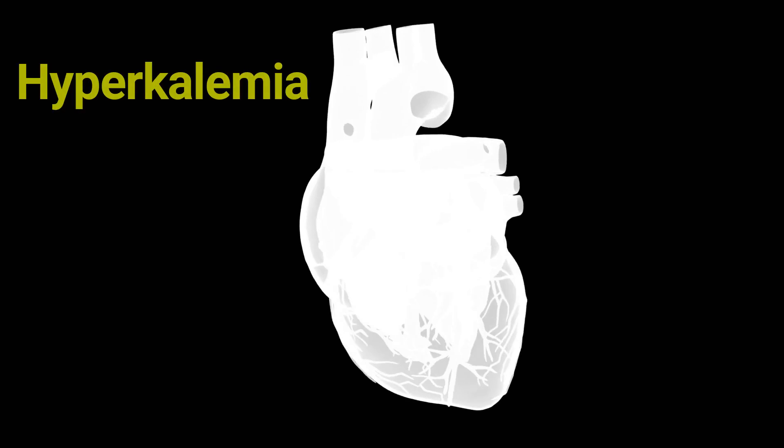Hyperkalemia refers to elevated levels of potassium in the blood. ECG changes in hyperkalemia progress through various stages as the potassium levels rise. Peaked T waves are one of the earliest signs — the T waves become tall and peaked, and may appear pointed or tent-shaped.